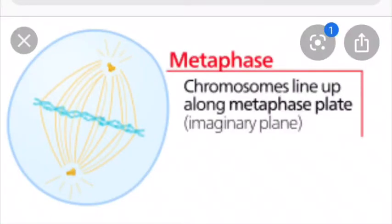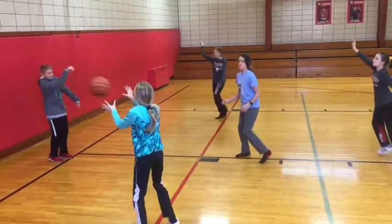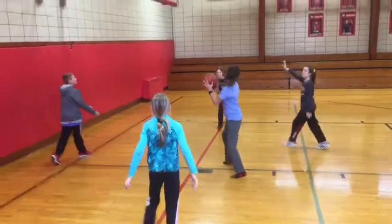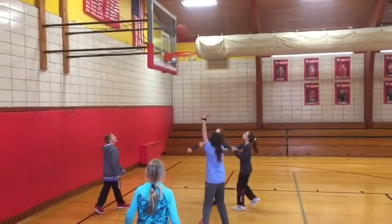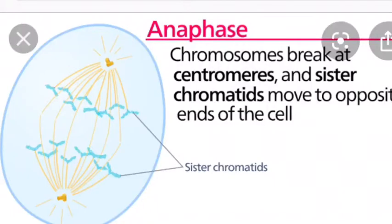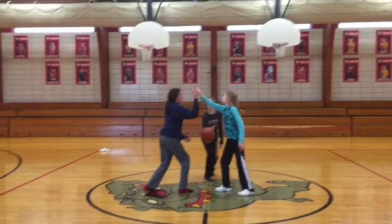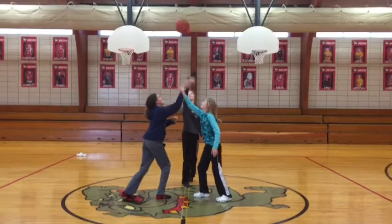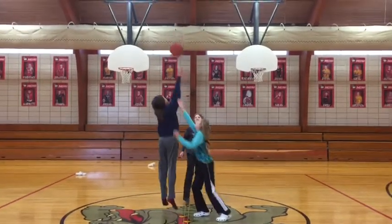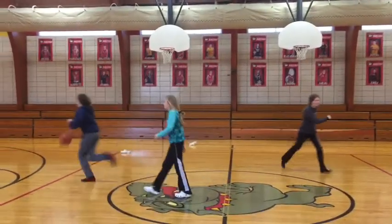Metaphase is compared to the play stack because the chromosomes line up and you line up on the court. Anaphase is compared to jump ball because the chromosomes break and move to opposite ends, like how a jump ball results in moving to opposite ends of possession.